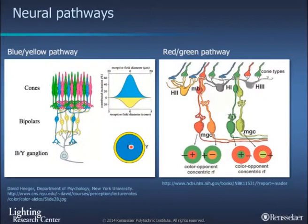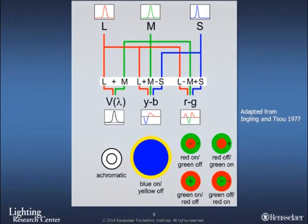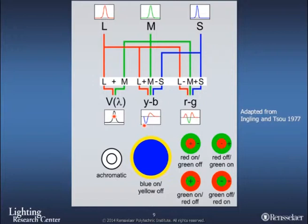Back in the 70s and early 80s, a number of people were working on modeling how brightness perception is formed. You start with the long, middle, and short wavelength cones. This is the wiring diagram: you get V-Lambda, which is just the L and M cone; the Y-B channel, which is L plus M (yellow) minus blue; and then L minus M plus S. Those get combined to produce these channel responses — V-Lambda, the Y-B channel, and the R-G channel. These form the spatial receptive fields that constitute color as well as acuity.